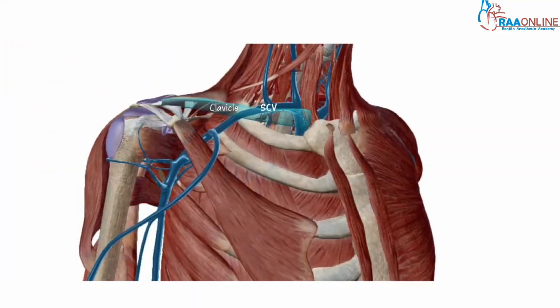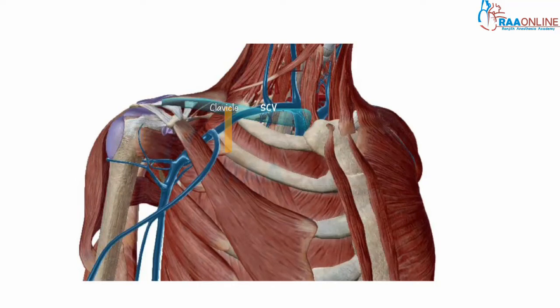Can we call this procedure ultrasound guided subclavian cannulation? No. Going by landmark-based technique the needle punctures the subclavian vein, but when the ultrasound probe is placed on the chest wall, the clavicle hinders visualization of the subclavian vein. So the part of the vein that is visualized and punctured is the infraclavicular part of the axillary vein.